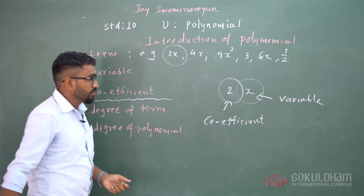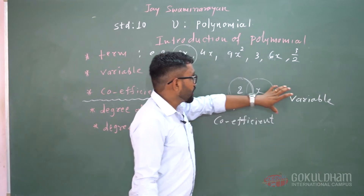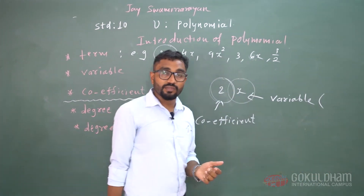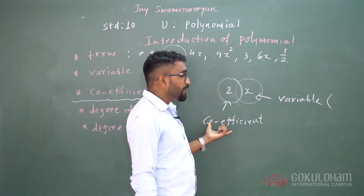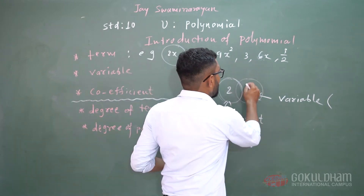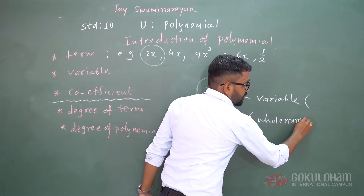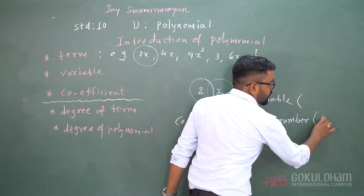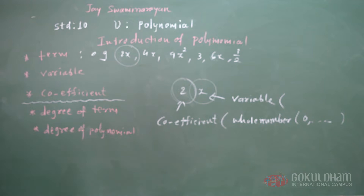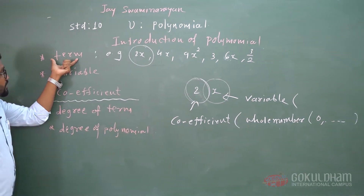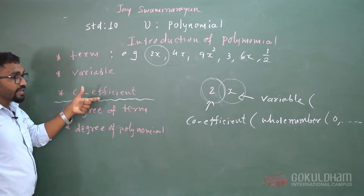In term 2x, x is the variable. We take variables from a to z, small letters of the alphabet. And 2 is the coefficient. It may be 0 — the coefficient ranges from whole numbers, from 0 to infinity. So from a term, we get the variable and the coefficient.